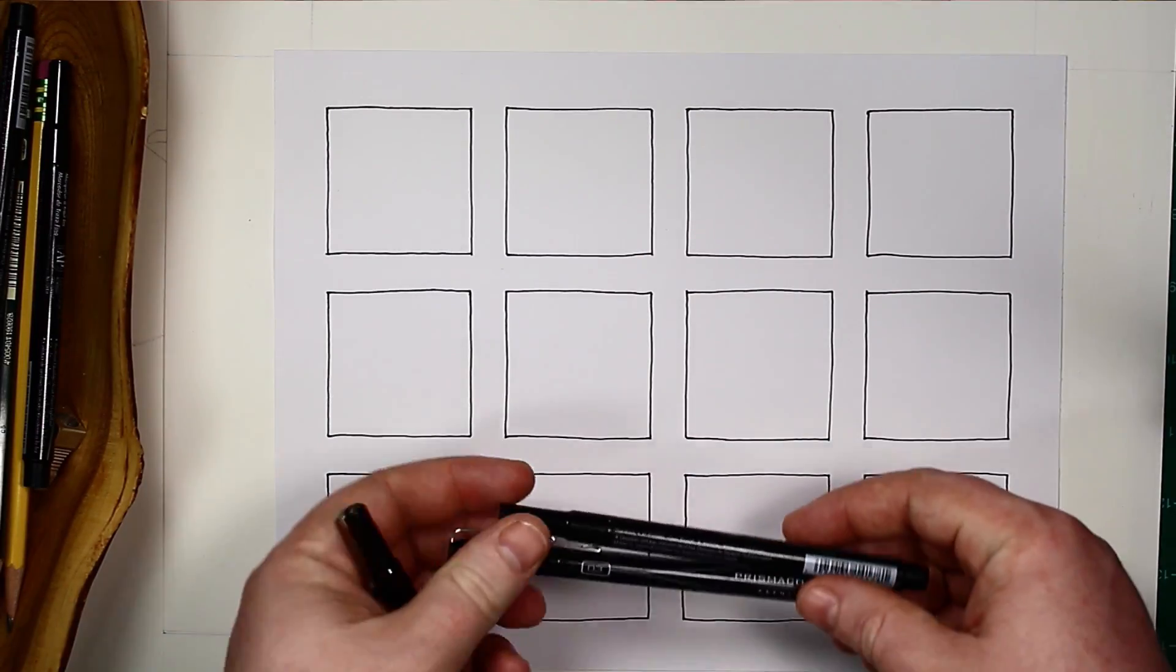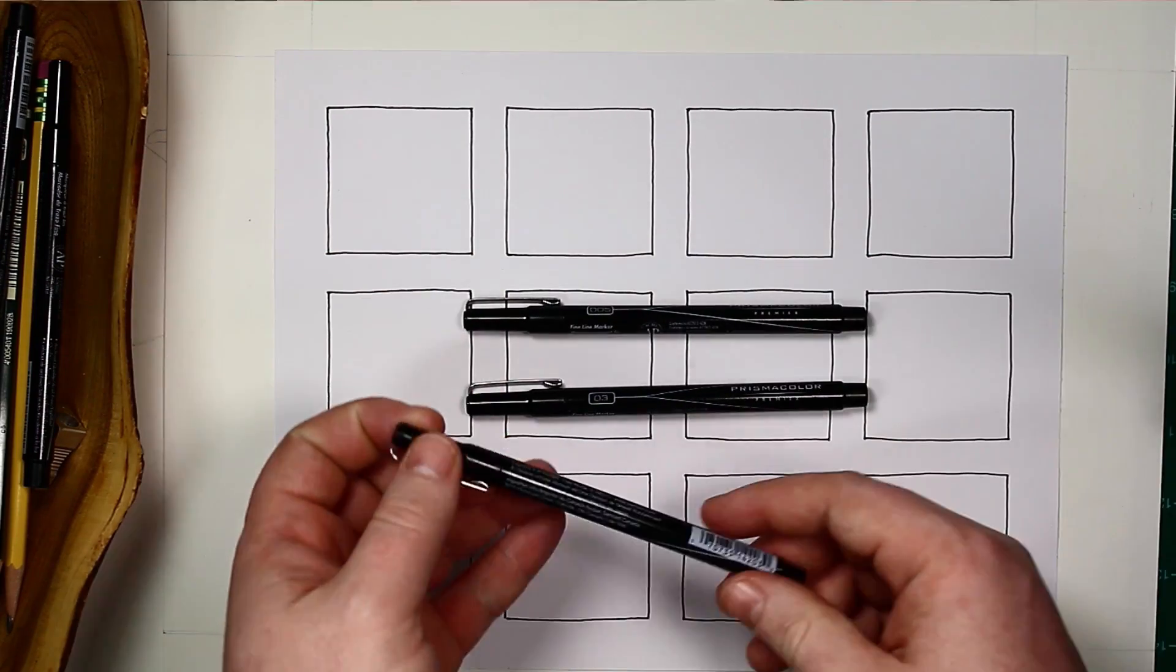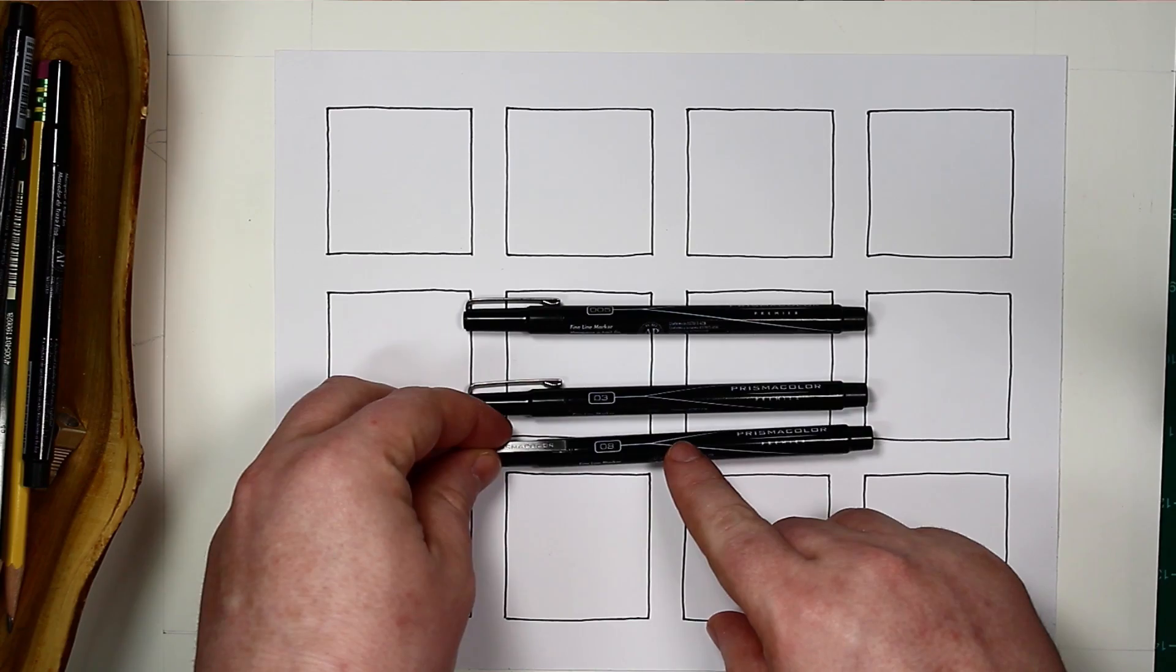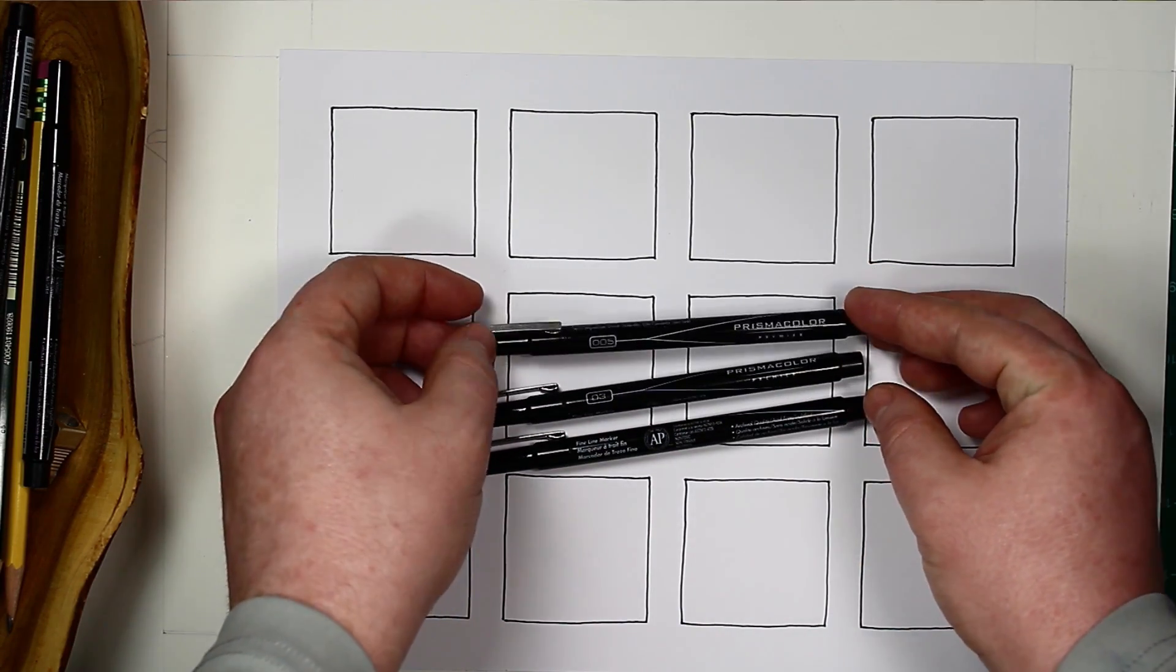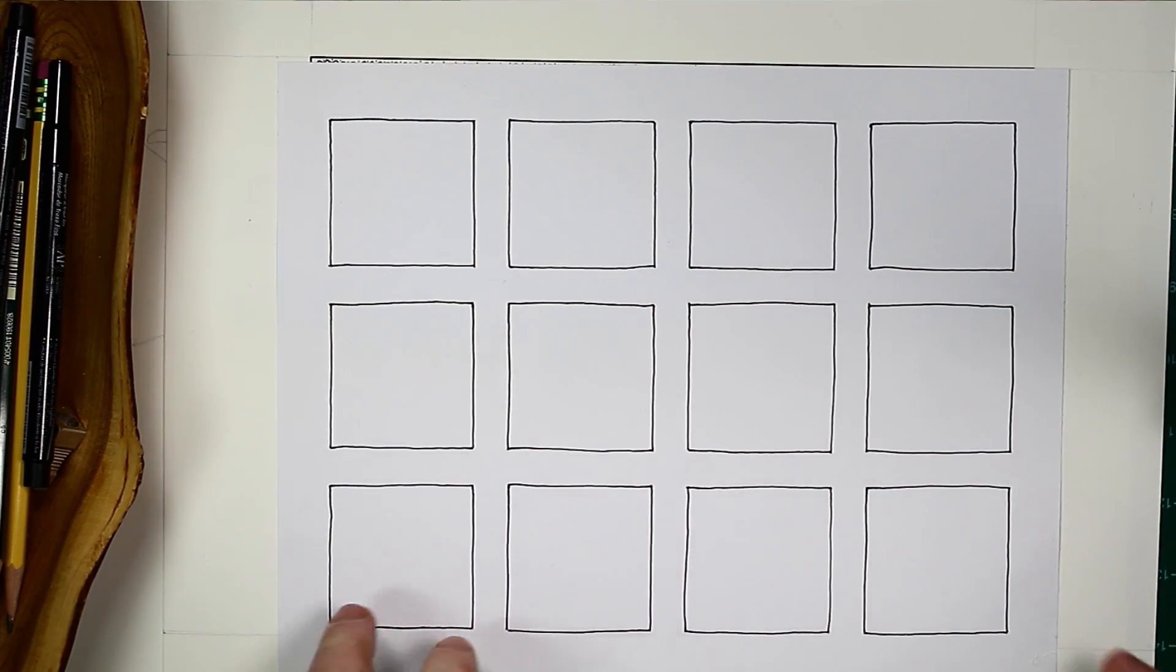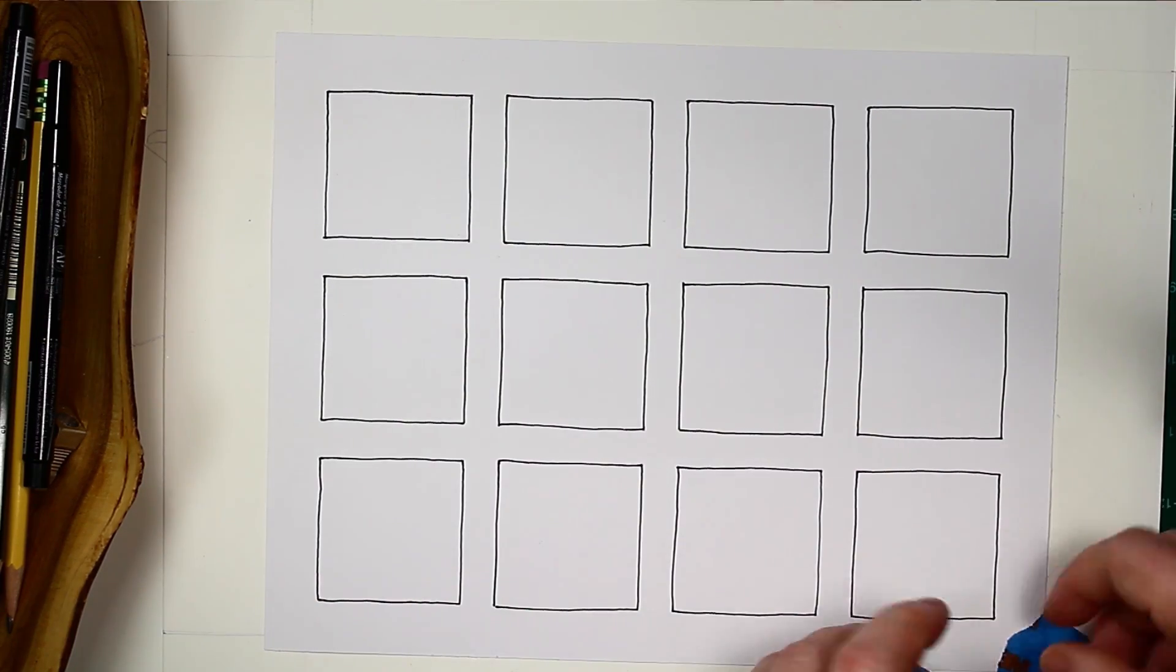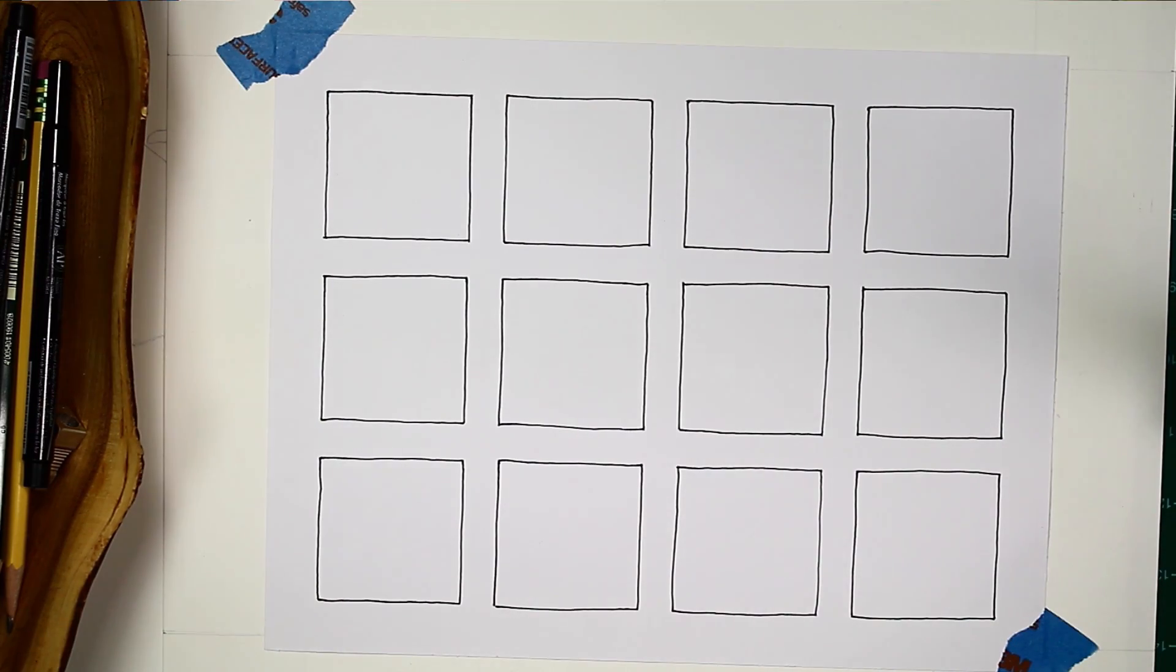Today I'm just going to be using three different sizes to keep things a little easier. The 08 is going to be my largest size, the 03 is going to be my medium, and the 005 will be my smallest. So I'm going to go ahead and tape this down so it won't move. And let's get started.